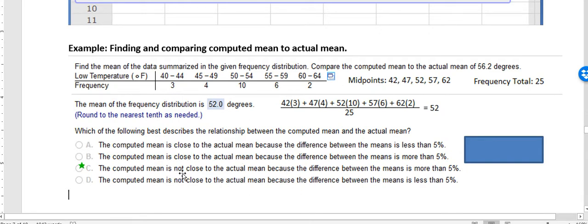It says the computed mean is not close to the actual mean, because the difference between the means is more than 5%. Now you can see up here they say the mean is 56.2, that's the actual, and our computed one was 52.0. And so at first glance, people think that doesn't look like it's 5, but that's not percent.